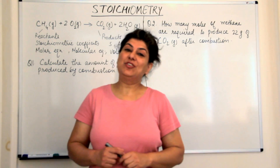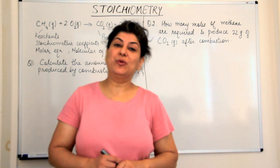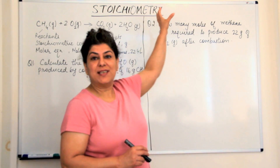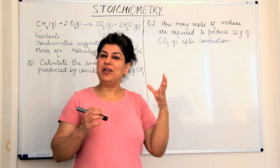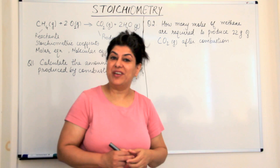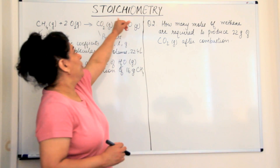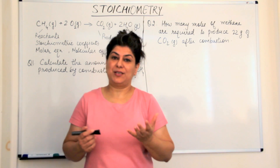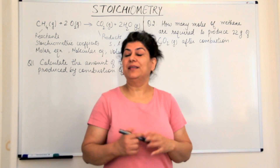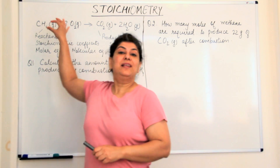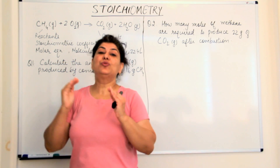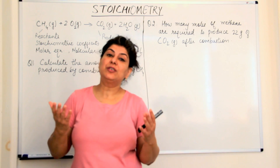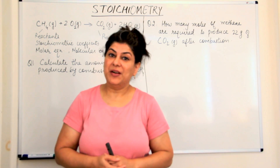Hello, the topic of this video is stoichiometry. As the word stoichiometry suggests, it feels as if it's a very complex subject, but it's actually very simple. Stoichion means element and metri means measurement. It's basically a method in which we use balanced chemical equations to calculate the amount of reactants and products that are required or may be produced in a chemical reaction.